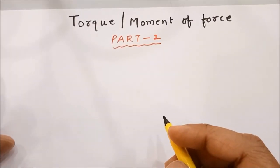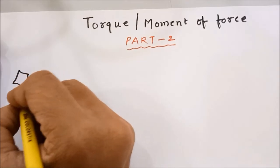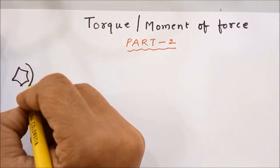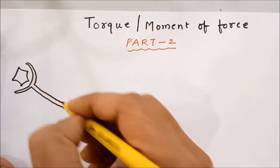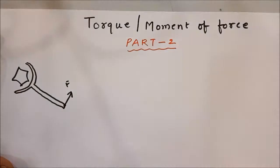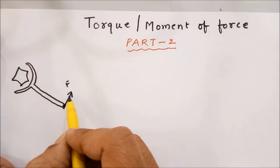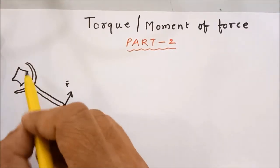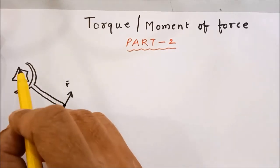Hello everyone. In the previous video on torque, we studied that if you have a bolt and you want to open it, you are required to exert a force with the help of a spanner. We were exerting some force F at a point called the point of application of force. When you exert this force, the nut bolt starts turning. The turning effect of force is called torque, and this is the point from where the axis of rotation of the bolt will pass.